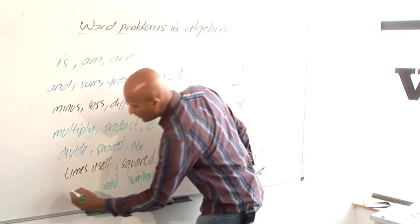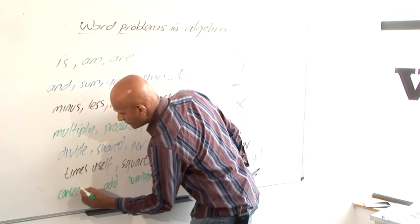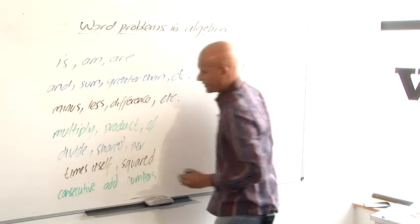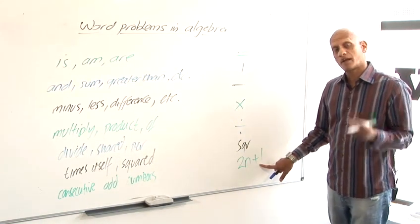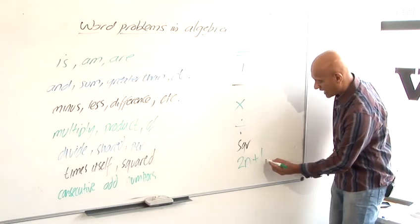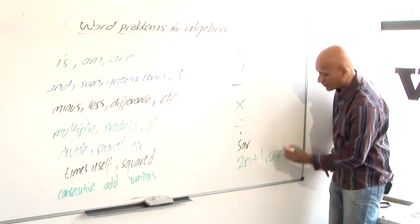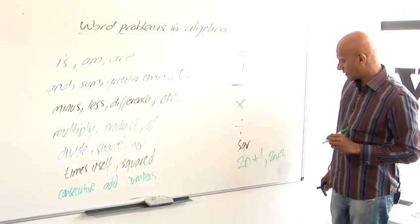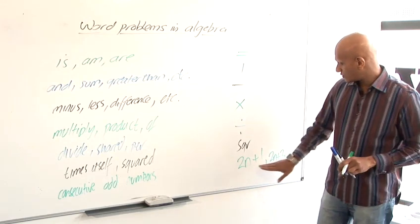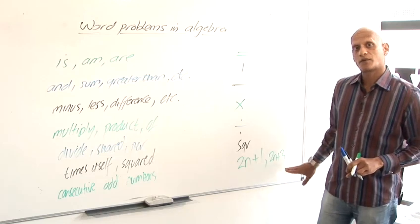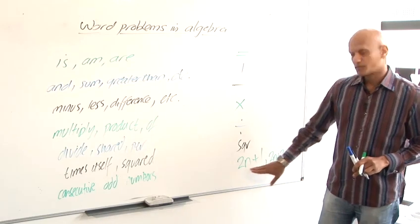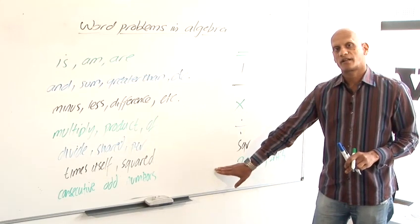And if we wanted consecutive odd numbers, then if our first odd number was 2n plus 1, then to get to the next odd number, we'd have to add another 2 to that. So it'd be 2n plus 3 would be our consecutive odd numbers. You don't have to do it as 2n plus 1, 2n plus 3. You can also do it as 2n minus 1 and 2n plus 1. So in other words, subtracting 2 from that one to get your other odd number.